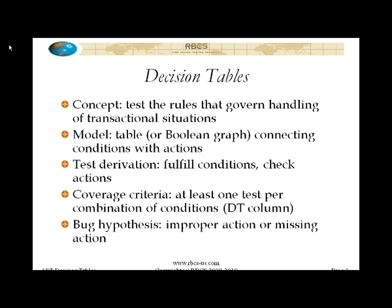For decision tables, the bug hypothesis is that there will be, under some set of conditions, an improper action taken — either the completely wrong action, the one which was supposed to not be taken is taken, or the right action is taken but it's carried out in the wrong way, carried out improperly. Or alternatively, the possibility is that there's an action that is supposed to be taken and it is not taken at all — some important bit of processing that the application was supposed to do doesn't happen. Those are the kinds of things we're looking for, and they are related to the business logic — doing the right thing based on the particular situation the program finds itself in.